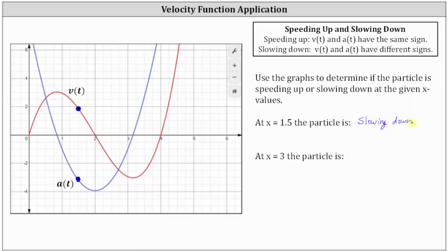And now let's locate the points where x equals 3. The point on the velocity function when x equals 3 is here — notice how the velocity is negative. The point on the acceleration function when x equals 3 is this point — notice how the acceleration is also negative. So because the velocity and acceleration have the same sign, the particle is speeding up at x equals 3. The velocity is negative and decreasing.